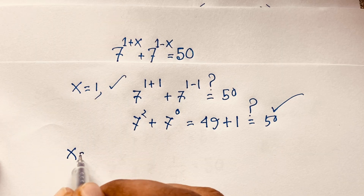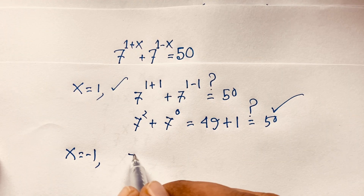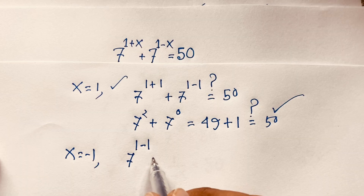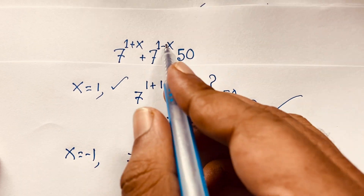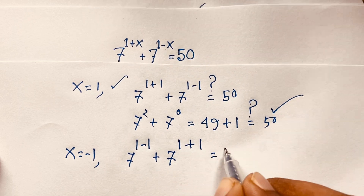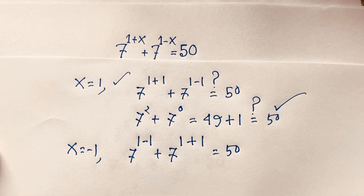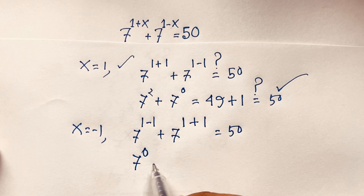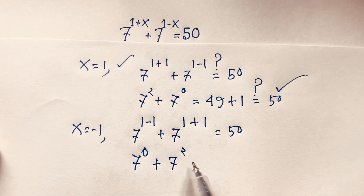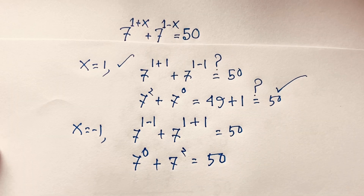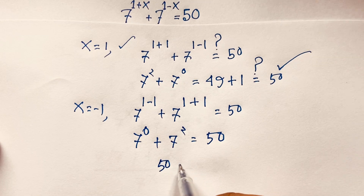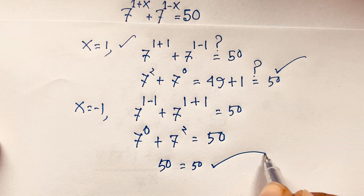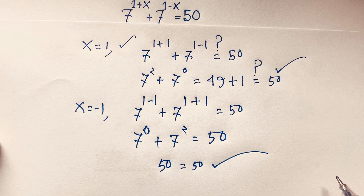When x equals negative 1: 7^(1 minus 1) plus 7^(1 plus 1) equals 7⁰ plus 7², which is 1 plus 49, equals 50. Left-hand side equals right-hand side. Thank you all — if you enjoyed this math problem please subscribe to my channel for other interesting videos. Goodbye, take care everyone!